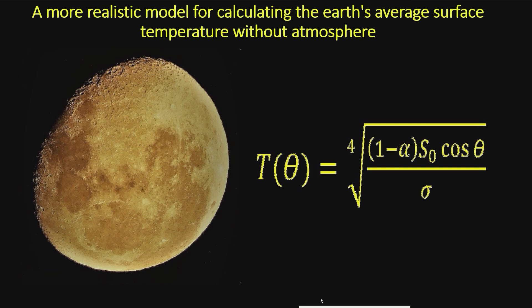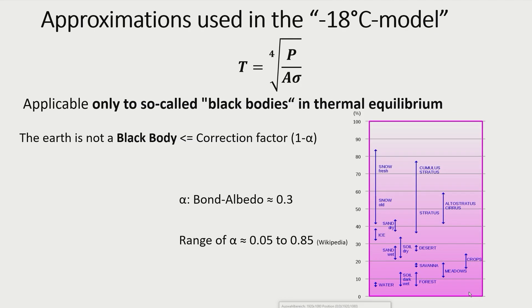Before I start with a version of this calculation that is closer to reality, I want to remind the approximations that were made in the minus 18 degrees centigrade model. The Stefan-Boltzmann law is applicable for black bodies in thermal equilibrium only. To correct for the Earth's reflectivity, a correction factor 1 minus alpha was introduced.